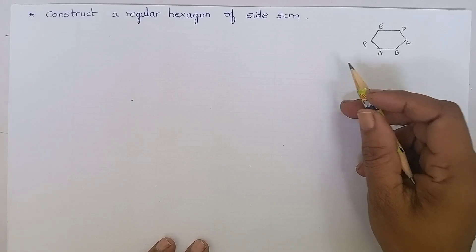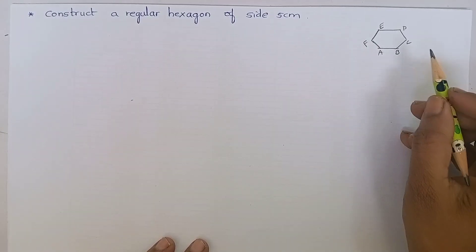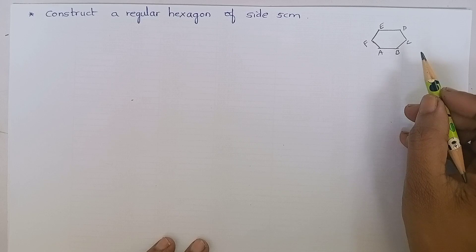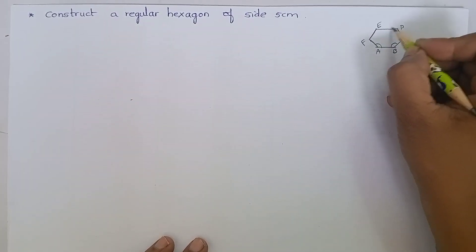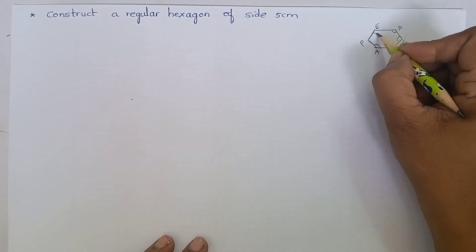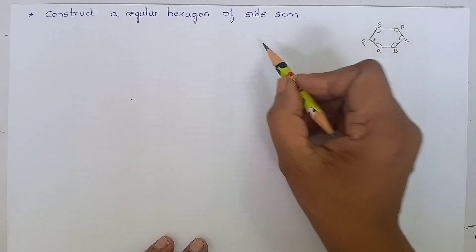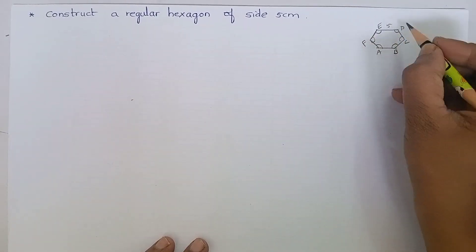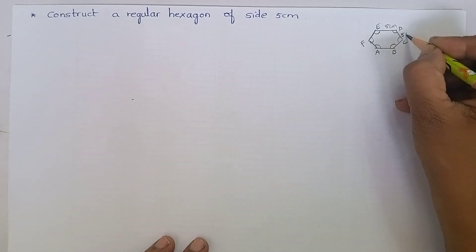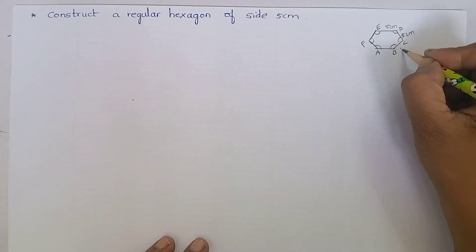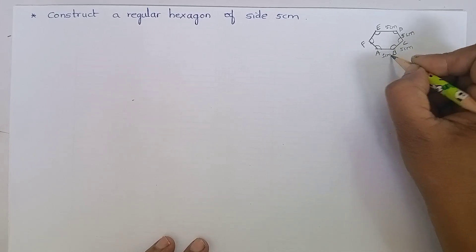Regular hexagon means all the sides are equal and all the angles are equal. Here they have given the side is 5 cm. Since it is a regular hexagon, each side measures 5 cm.